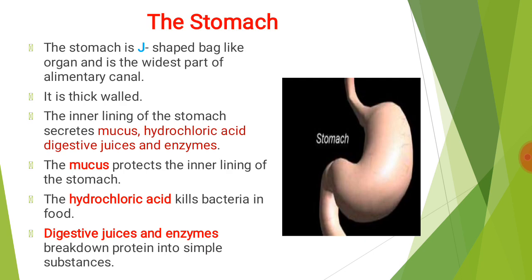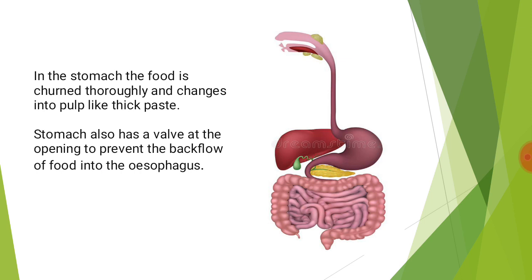The esophagus continues into the stomach. The stomach is a J-shaped bag-like organ and is the widest part of the alimentary canal. It is thick-walled and its inner lining secretes mucus, hydrochloric acid, digestive juices, and enzymes like pepsin and renin. The mucus protects the inner lining of the stomach. The hydrochloric acid kills bacteria in food. Digestive juices and enzymes break down protein into simple substances. In the stomach, food is churned thoroughly and changes into a pulp-like thick paste. The stomach also has a valve at its opening which prevents the backflow of food into the esophagus.